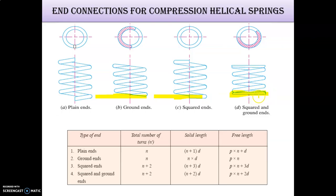Square and ground end combinations are also shown. For high loading conditions, these types of springs are used. The table shows the free length, solid length, and number of turns for each end type. This is a straightforward part of compression helical spring end connections.